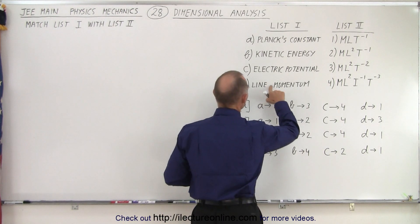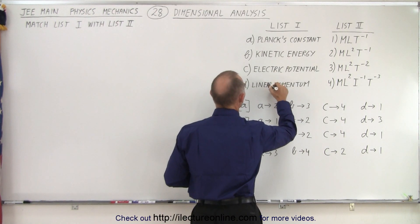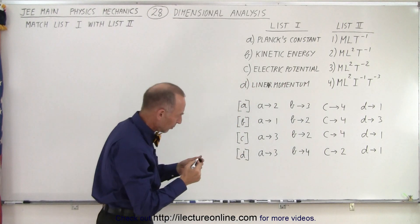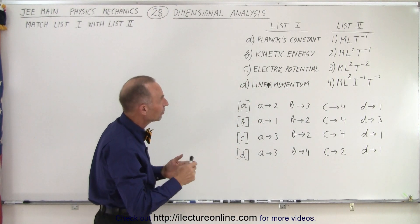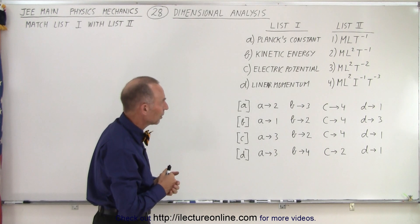Oh, we're missing an A here. Let's put an A in there. Linear momentum. And on the right side we have MLT to the negative 1, ML squared T to the negative 2, ML squared T to the negative 3, ML squared.